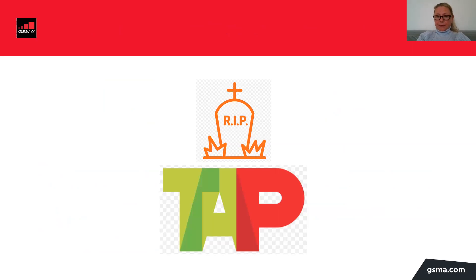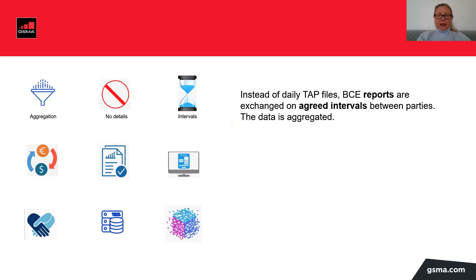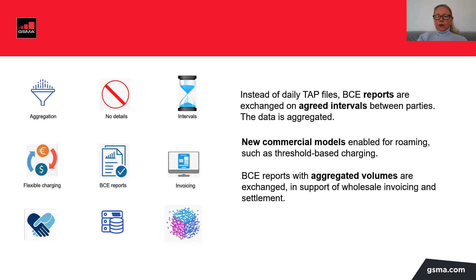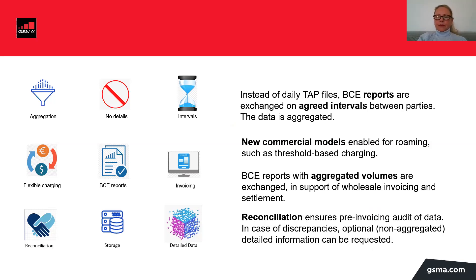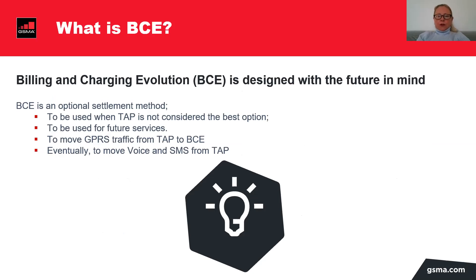So we say rest in peace TAP and let's go on to BCE. So what is BCE? BCE is all about aggregation — no detailed records are sent anymore. It's an agreed interval between you and your roaming partner, so most likely there will be no daily exchange of data anymore. I would envision monthly exchange. New commercial models are enabled for roaming such as threshold-based charging. Aggregated volumes are included in so-called BCE reports, which are then the basis for invoicing. Reconciliation is key in the BCE process because it ensures pre-invoicing audit of data and makes sure that invoices are 99.9% correct. BCE is designed with the future in mind and it can be used when TAP is not considered the best option — so when you don't need CDR-level data.